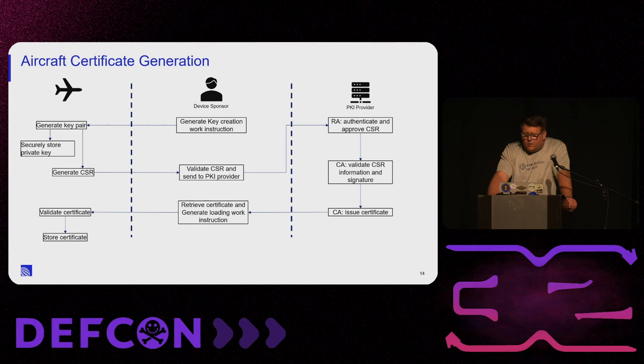This is especially important for confirming aircraft identities, because the PKI provider does PKI — they don't do aircraft. This creates a challenge when it comes to the audit side of the PKI, and that audit is a key part of Spec 42. The RA will authenticate and approve the CSR, which gets passed on to the certificate authority who validates the CSR information and the signature, then issues the certificate. Your technician goes back, retrieves the certificate, generates the work loading instruction, takes it to the aircraft, the aircraft validates the certificate, and you're done. One of the key things is that just like generating a key pair on a server, the private key stays on the aircraft.